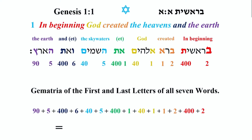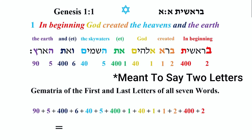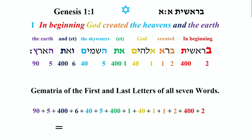If we take the gematria of the first and last letters of all 7 words: Bet is 2, Tav is 400. For Barah you have Bet and Aleph — 2 and 1. For Elohim you have Aleph and Mem — 1 and 40. For Et, Aleph is 1 and Tav is 400. For HaShemayim, He and Mem — 5 and 40. For Va'et, Vav is 6 and Tav is 400. And for HaAretz, He is 5 and Sadi is 90. The gematria of the first and last letters of all 7 words adds up to 1,393 — which is divisible by 7, 199 times.